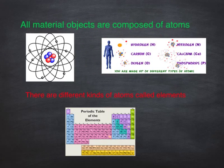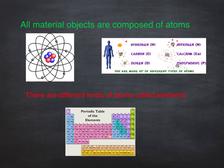We know that all materials are composed of atoms. You are composed of atoms, and here's an example of some of the different types of atoms found inside your body. Here is a conventional picture of what an atom looks like, and we also know that there are many different kinds of atoms, and those different kinds of atoms make up all of the different elements that we find in the world.